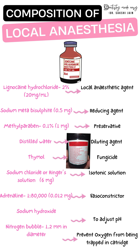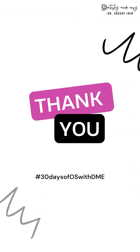Distilled water is used to dissolve the components of local anesthesia. Sodium chloride or Ringer's solution makes the solution isotonic, which reduces the burning sensation when giving the injection. Sodium hydroxide is used to adjust the pH if the local anesthesia is too acidic. Finally, a nitrogen bubble prevents oxygen from being trapped in the cartridge. The picture attached shows the most commonly used local anesthesia with adrenaline in India.